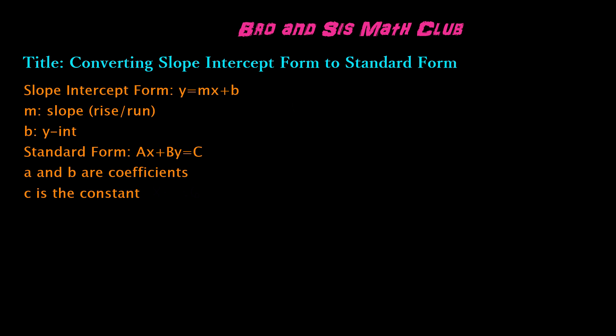Now let's go ahead and do an example. Let's say that we have the slope-intercept form equation y equals one-third x plus two.